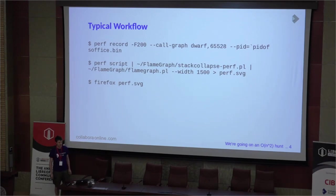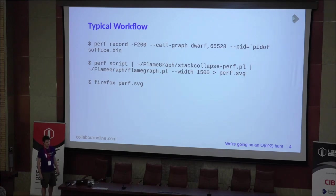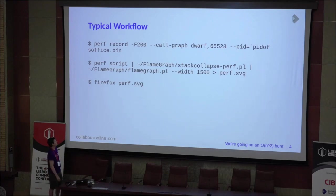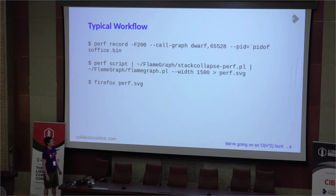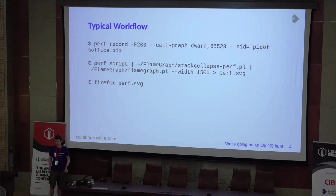My typical workflow looks something like this. You have to install Perf first and a handful of support libraries, and then the command is perf record. The dash F parameter is the frequency of sampling. Typically I tweak the frequency of sampling so that I get roughly 100 megabytes worth of sample data. You can see I've set the call graph, telling Perf that I want stack traces for everything that comes out of the data.